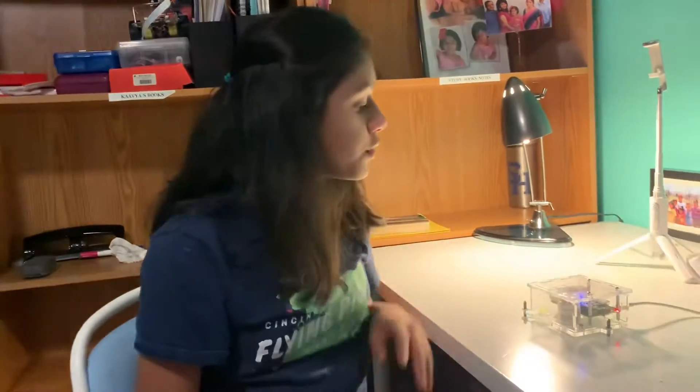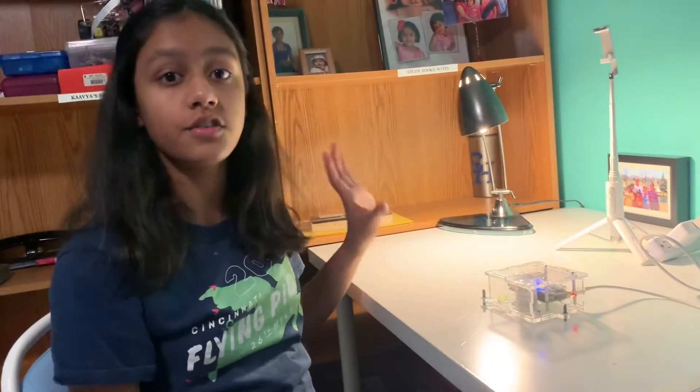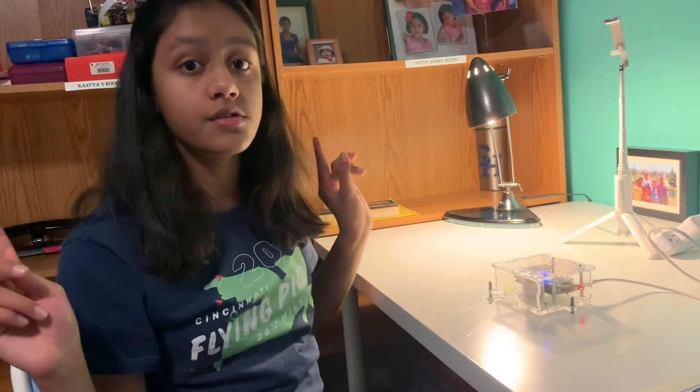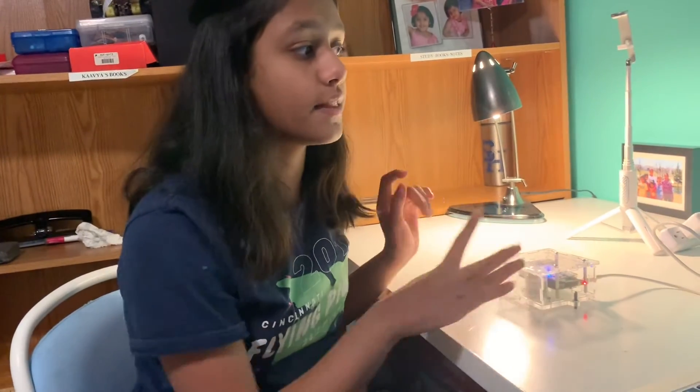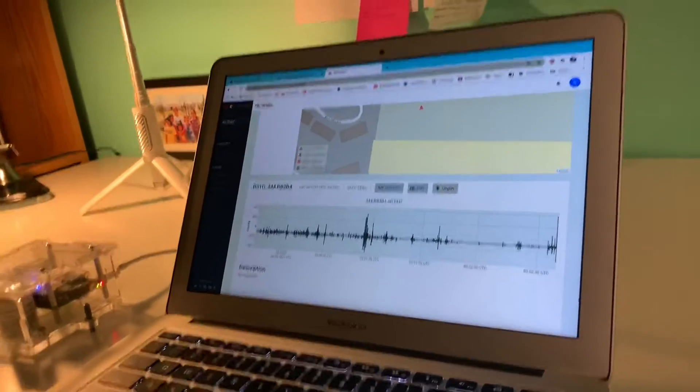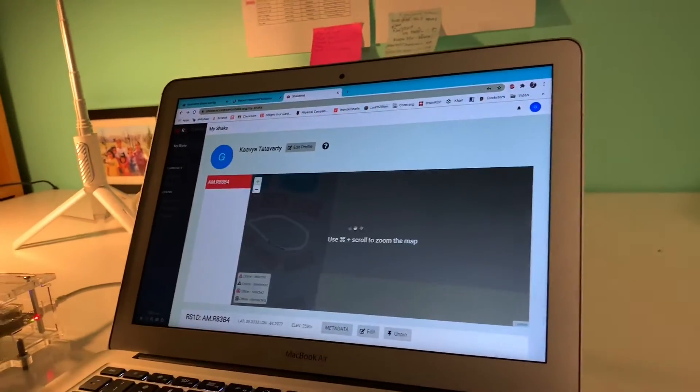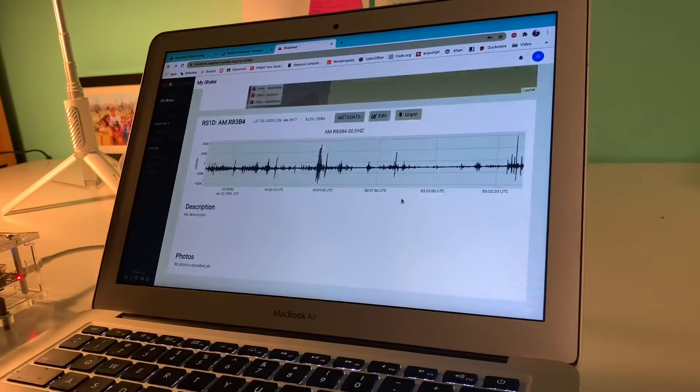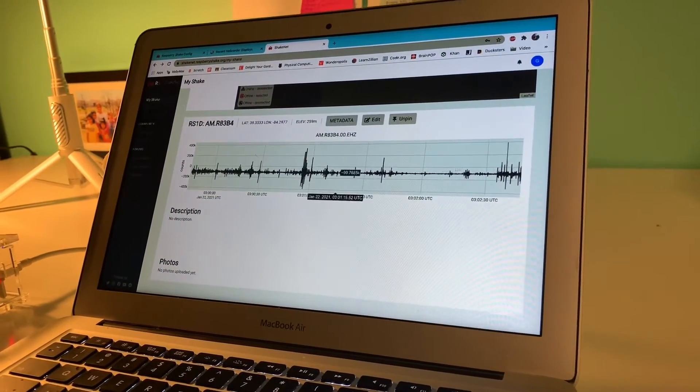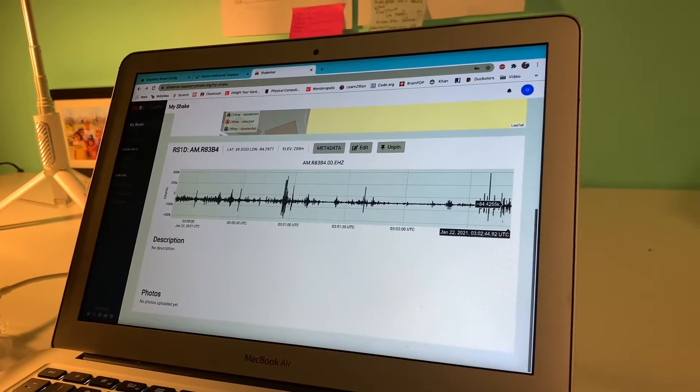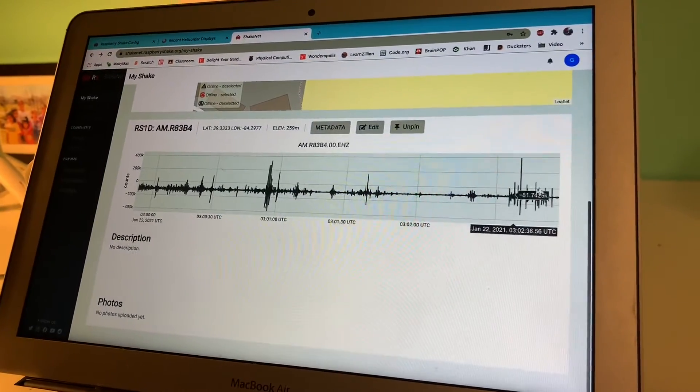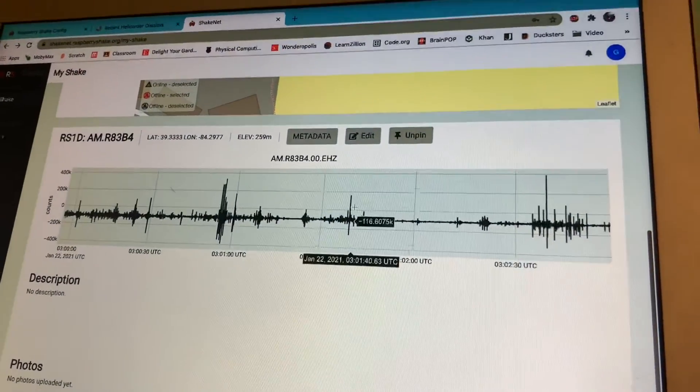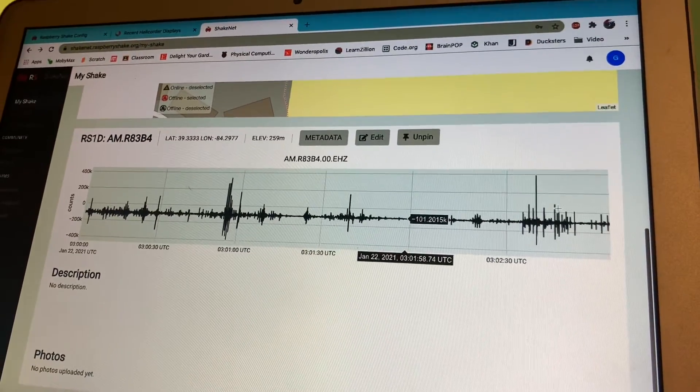So from the geophone sensor, you might be wondering where does the data go to? How can we see the data? This whole thing connects to Wi-Fi and then it uploads it right here on raspberryshake.net. Right here, this is my Raspberry Shake showing up on this map, and you can see the data. Since we have been moving about, you can see there are some peaks and it's a little bit high, but otherwise this is just a normal thing.